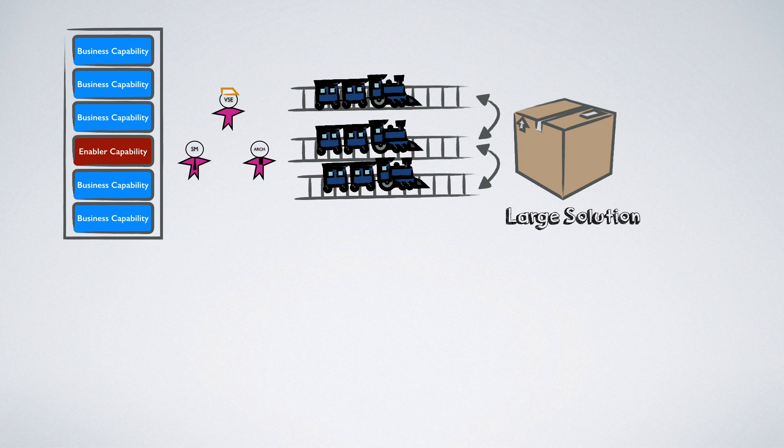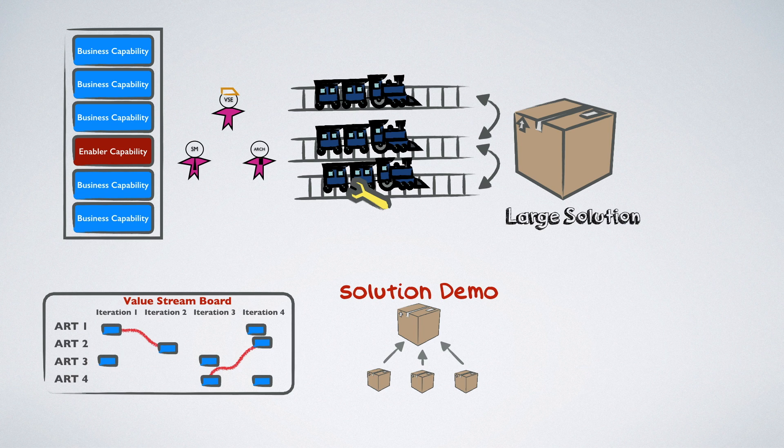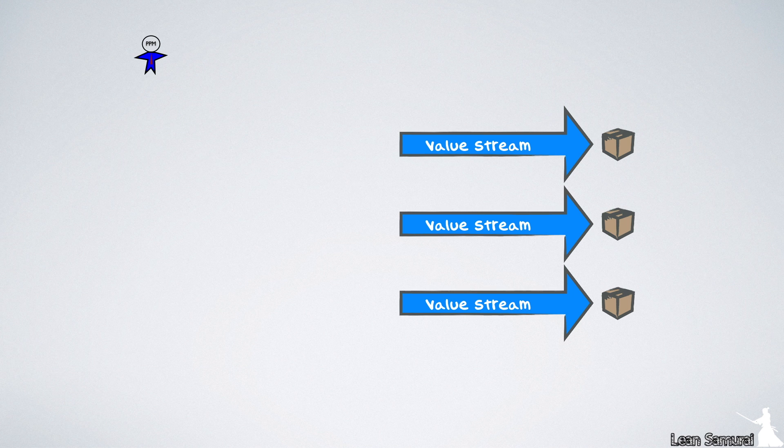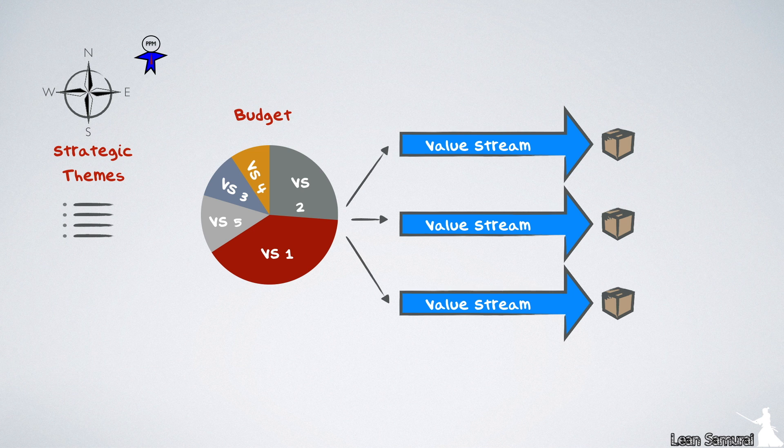The value streams run on the same PI cadence as the ARTs and has planning, solution demo, and inspect and adapt for cross-ART capabilities. The portfolio level is different yet similar. Program portfolio management helps dictate direction for all underlying value streams by deriving strategic themes from the enterprise strategy and allocating budget to value streams to support these themes. They also manage cross-value stream initiatives, which impact several solutions in the form of epics.